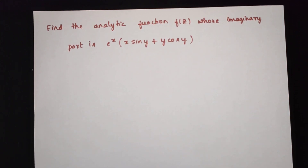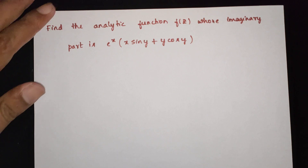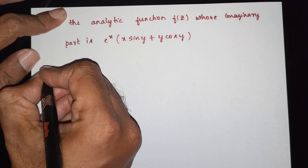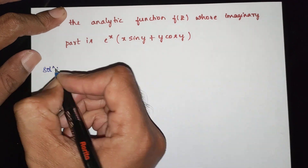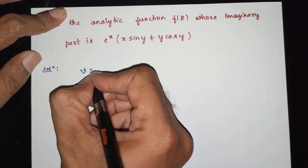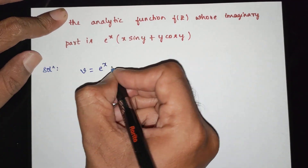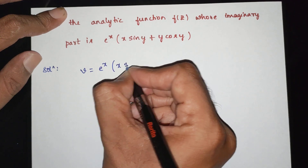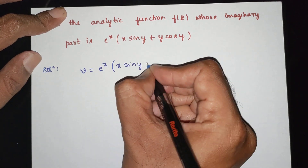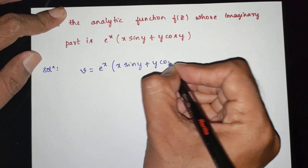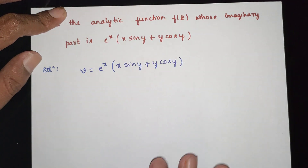In the next question, find the analytical function given the imaginary part v is equal to e power x times sin y plus y cos y.